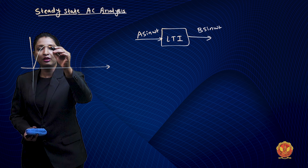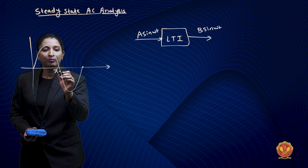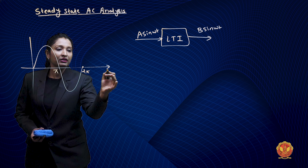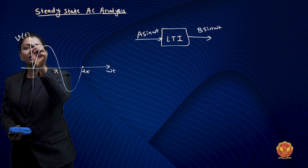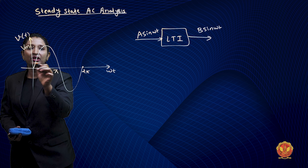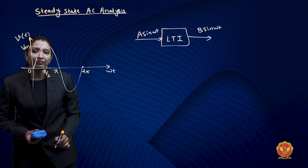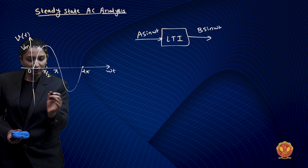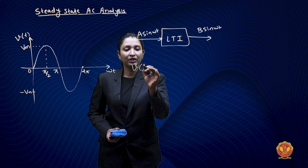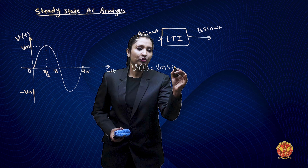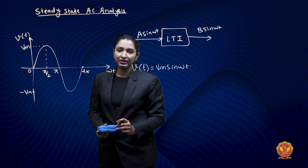How do we represent a sinusoidal signal? To represent it, we take a sine wave. This is π, this is 2π, this is ωt on the horizontal axis. This is voltage, v of t, on the vertical axis. This is the maximum value, at π/2 it is zero. This is the representation including the negative peak, minus Vm. So v of t is equal to Vm sin(ωt).